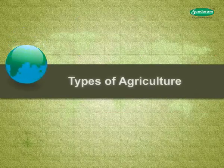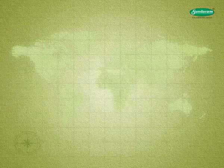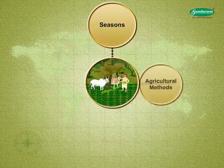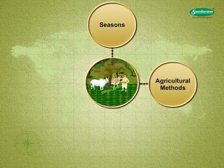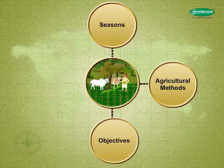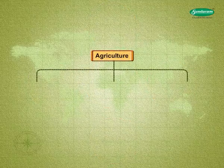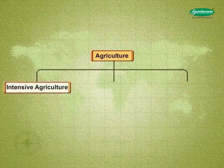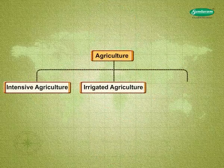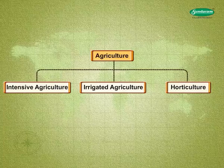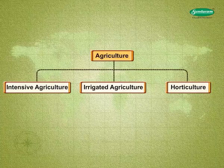Types of Agriculture: Agriculture is classified on the basis of seasons, agricultural methods, objectives of the farmers, and type of produce. Intensive Agriculture, Irrigated Agriculture, and Horticulture are the major types of agriculture. Let us see these categories one by one.